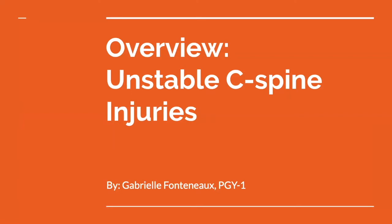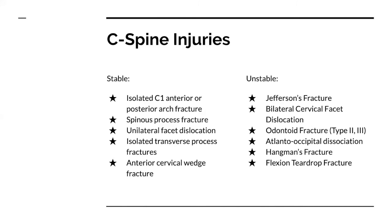This is a list of c-spine injuries classified into stable and unstable. This is by no means exhaustive. I'll be talking about the ones on the right of the screen: Jefferson's fracture, bilateral cervical facet dislocation, odontoid fractures type 2 and 3, atlanto-occipital dissociation, hangman's fracture, and flexion teardrop fracture. As a side note, the anterior cervical wedge fracture can be considered unstable if you lose over half the vertebral height or have multiple adjacent wedge fractures.